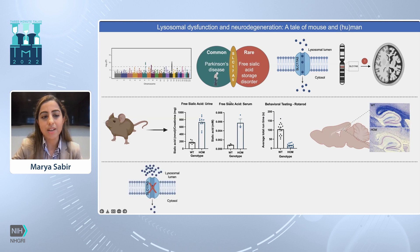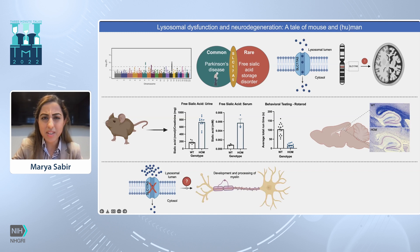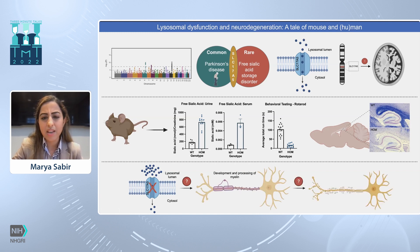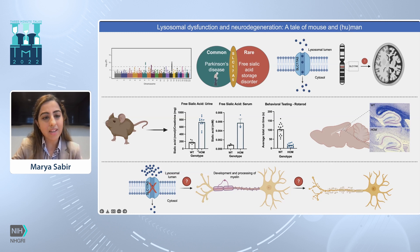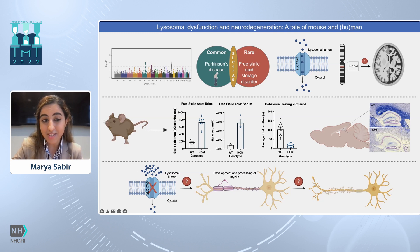We have learned that free sialic acid builds up within the lysosome, but how this leads to the development and processing of myelin remains to be understood. In addition, how this leads to the death of neurons remains to be understood as well. Our future studies are focused on assessing optimal lysosomal homeostasis, its role in myelin, and neuronal loss.